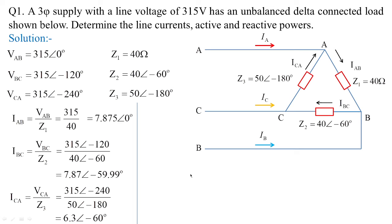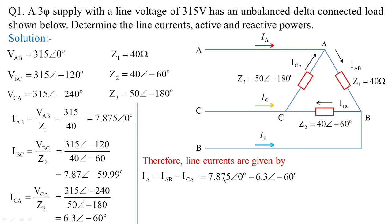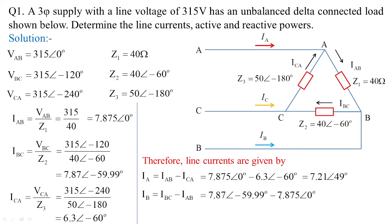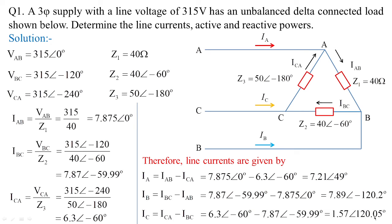Once the phase currents are obtained, we get the line currents by applying KCL at the particular nodes of this delta network. IA equals IAB minus ICA, whose value is 7.21 at angle 49 degrees. In some cases you might get the answer in rectangular form — just convert rectangular to polar form to get the final result. Similarly, IB equals IBC minus IAB, which equals 7.89 at angle minus 120.2 degrees. And IC equals 1.57 at angle 120.05 degrees.